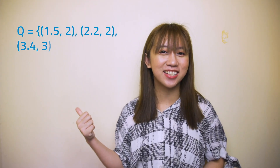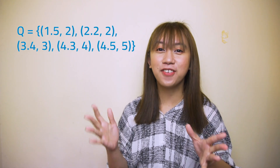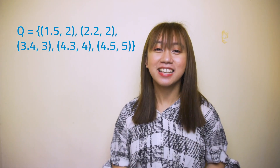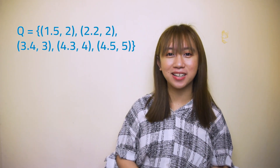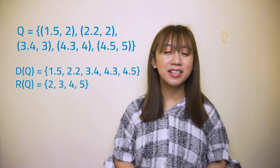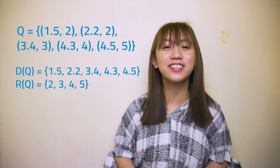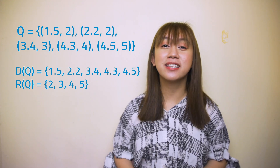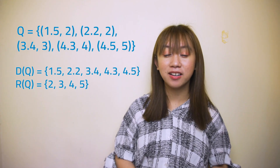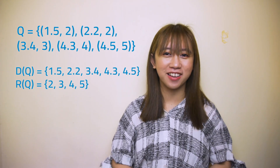Last one — can you give me the domain and range of this relation? Very good! The set of domain Q are 1, 5, 2, 2, 3, 4, and 4.5. While the set of range Q are 2, 3, 4, and 5. Fantastic!